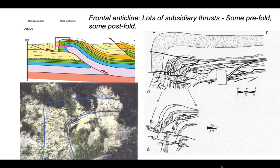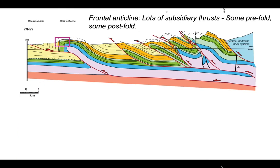We're significantly away from the major thrust which is inferred to carry this fold, as you can see in the coloured cross section in the top left. There are lots of subsidiary thrusts — some predate the folding and are folded into the forelimb, while some post-date the fold and cut the steep forelimb beds.